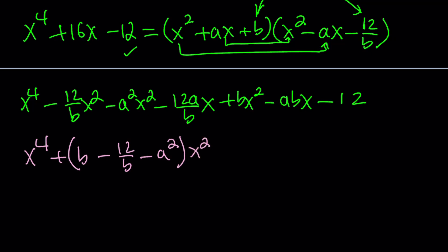But let's go ahead and put the like terms together. So we have x to the fourth. Like I said earlier, there's no x cubed. So the coefficient of x squared is going to be b minus 12 over b minus a squared. Those are all the x squared terms. This one, this one, and this one. And then finally, the x term is going to be minus 12 a over b plus a b, because I took out a minus sign, minus 12.